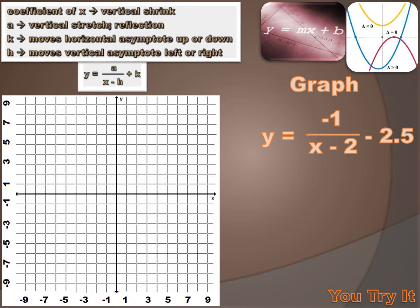Okay, let's graph this. The first thing we want to do is put in our asymptotes. My horizontal asymptote is defined by the k value: y equals k. My k is minus 2 and a half, so I'll put a line at y equals minus 2 and a half. My vertical asymptote is x equals h, and my h is 2, so I'll draw a line at x equals 2.